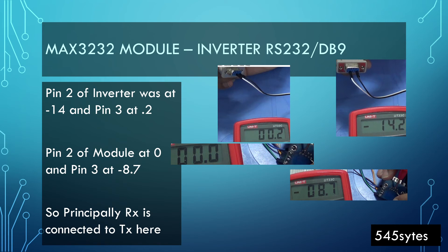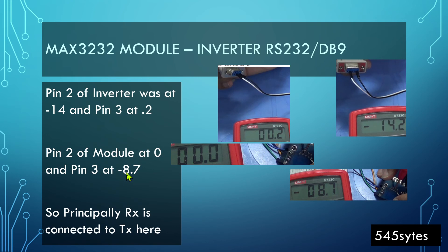Let's talk about the pin connections. Recall that pin number 2 of the inverter was at minus 14, so it was transmitting, and pin 3 was at minus 2, which is receiving. So pin 3 of the inverter, which is receiving, has to connect with pin 3 of the MAX3232 module at negative 8. So 3 connects with 3 and 2 connects with 2. This means MAX3232 and the inverter are cross-linked - RX is connected with TX. When talking about Arduino and MAX3232, RX was connected with RX and TX with TX. I hope this helps while wiring your solution.